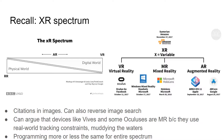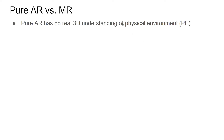Almost any head-mounted display made in the last few years would be classified as MR, even though there's a conceptual difference between the HoloLens and the Oculus Quest. In the Oculus Quest you don't see the real world unless you're doing Guardian calibration, whereas in the HoloLens you always see the real world — it has opacity but can never completely block the real world.